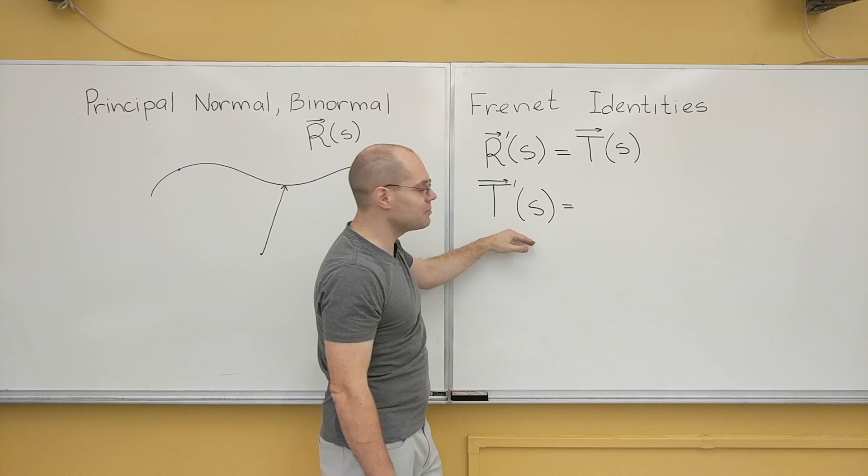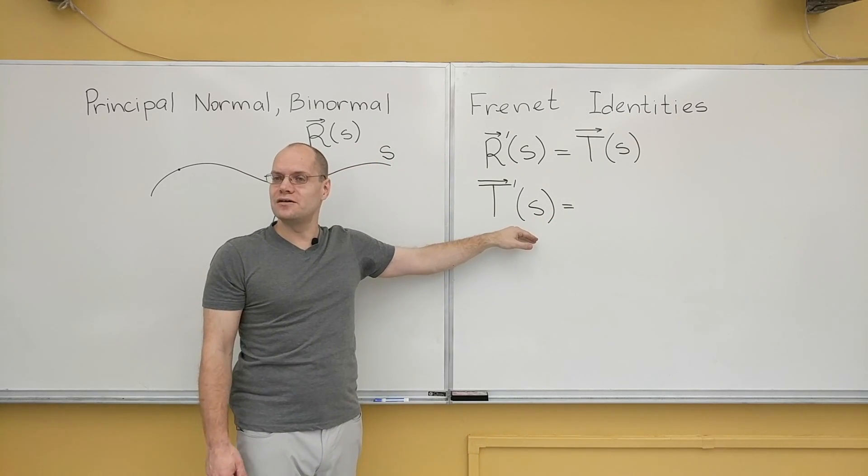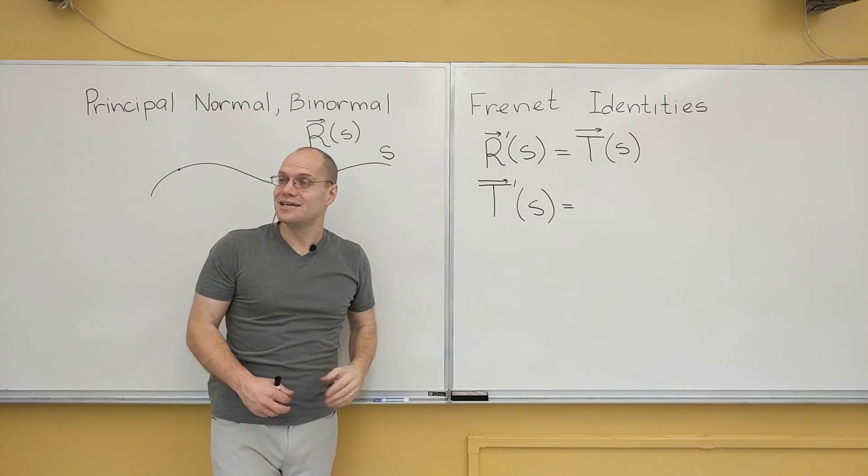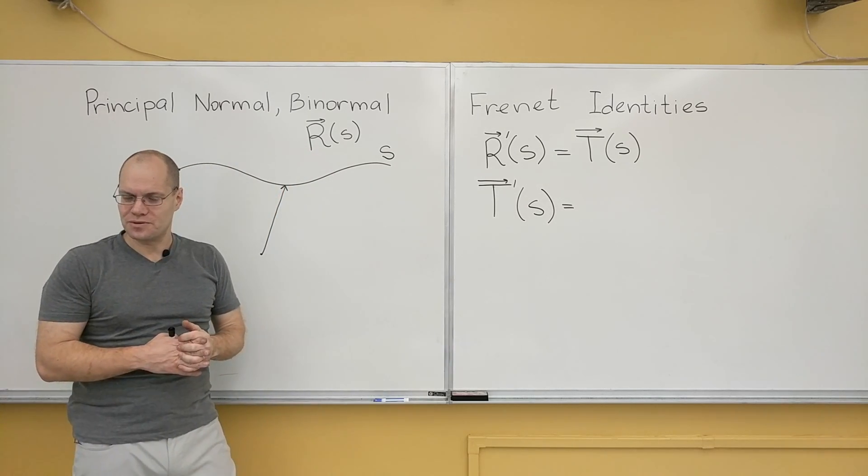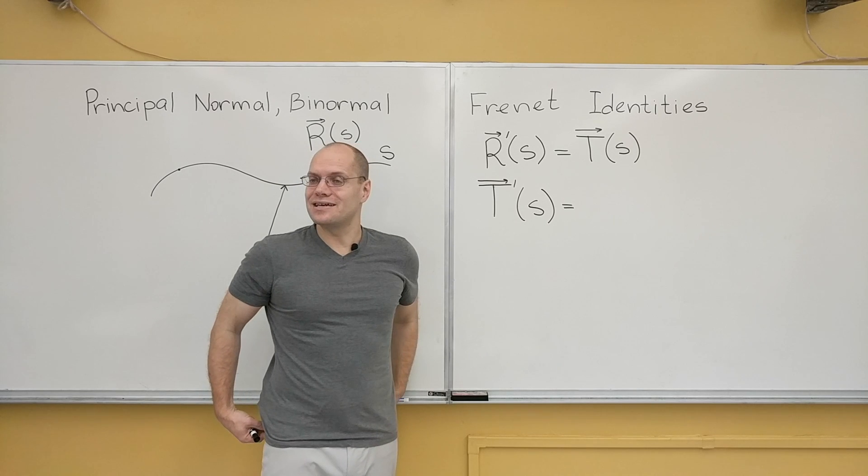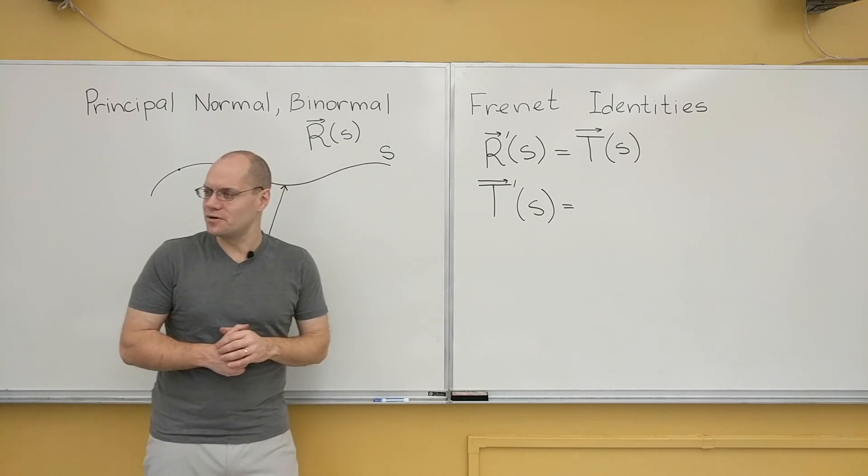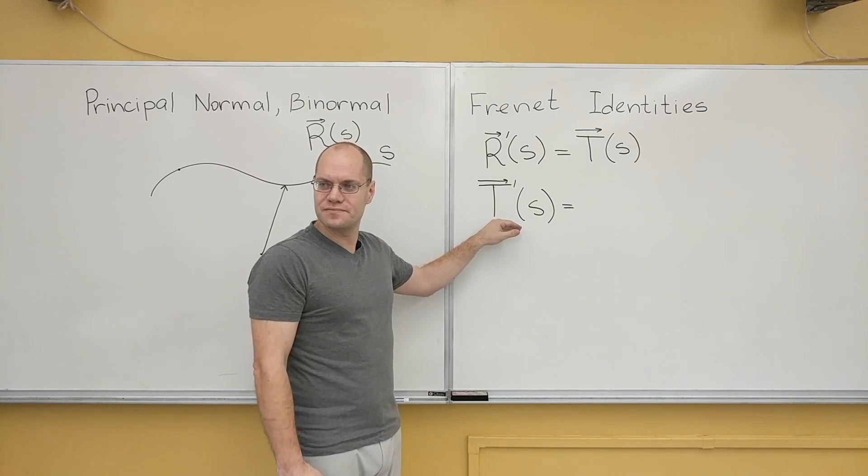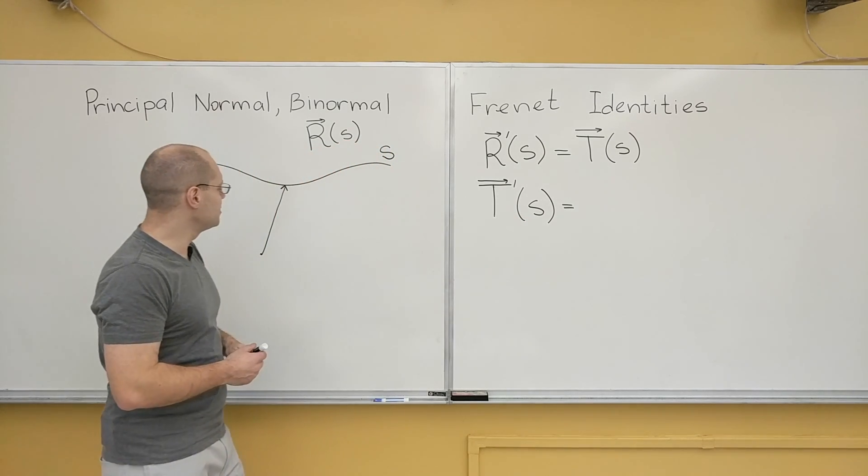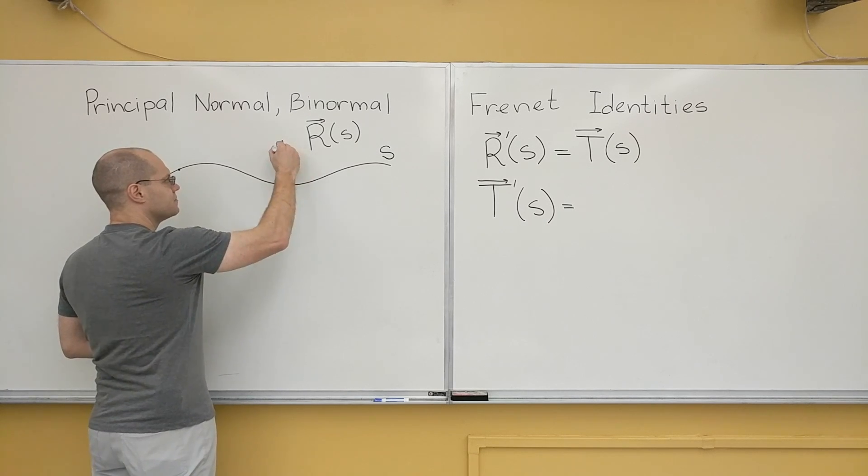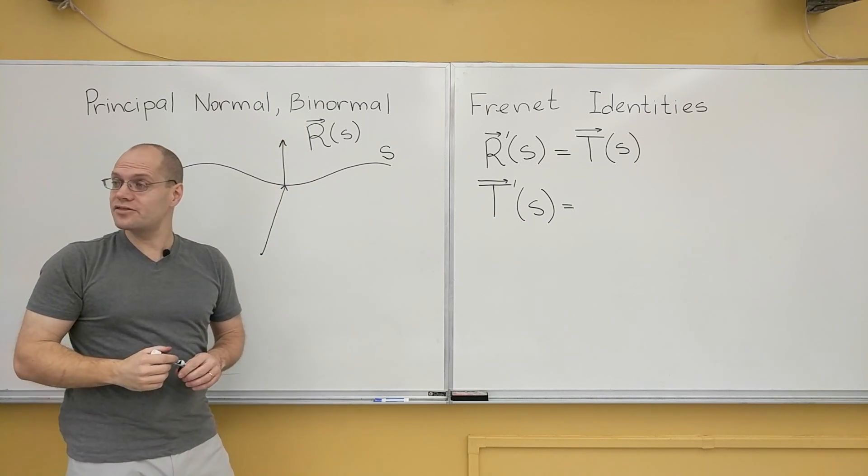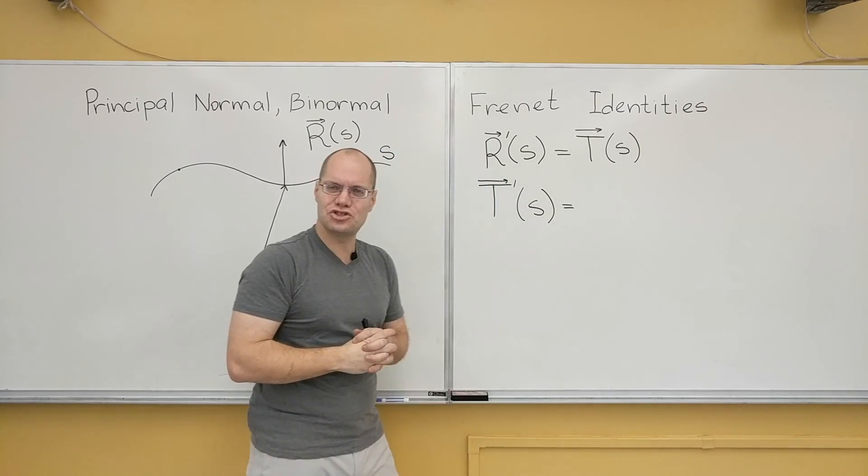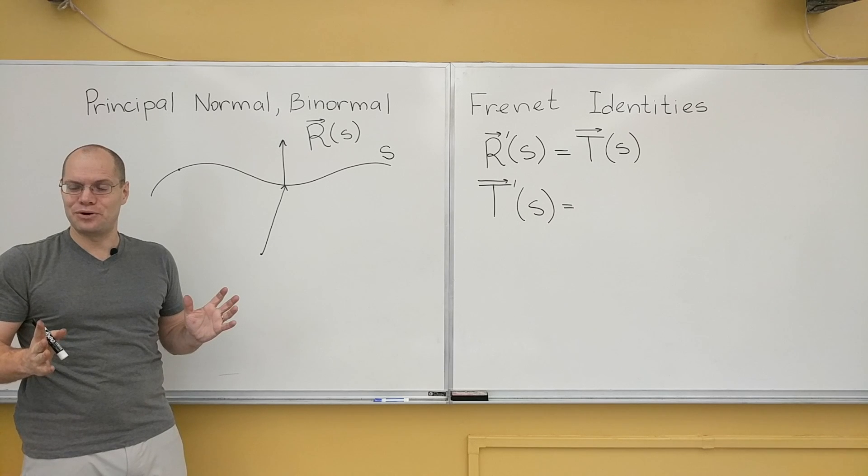Okay. So T prime of s is orthogonal to T. So it points in the normal direction. In fact, that's the definition of the normal. That's the analytic definition of the normal. It's the derivative of the unit tangent. It points in the normal direction. So I will draw it like this. Is it unit length? Let's think about it.